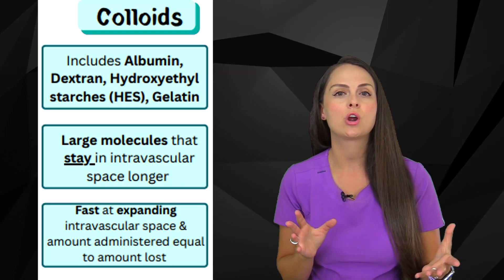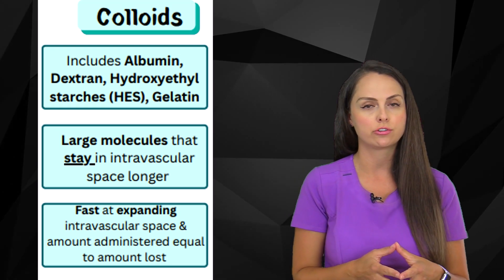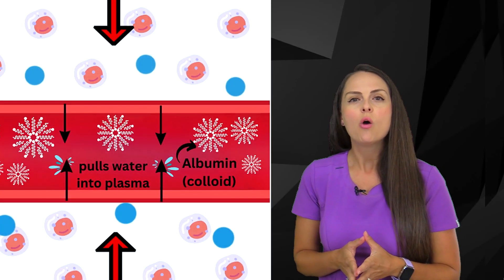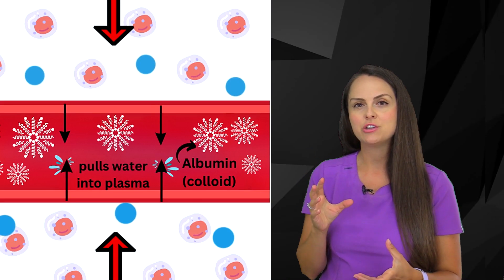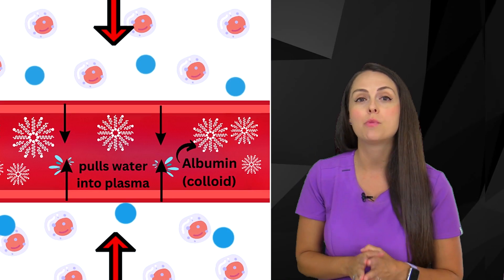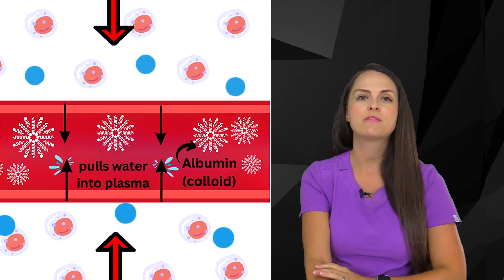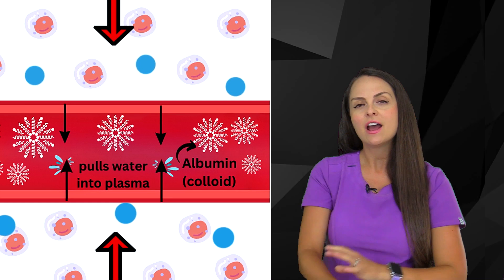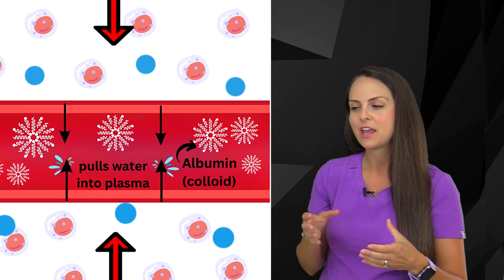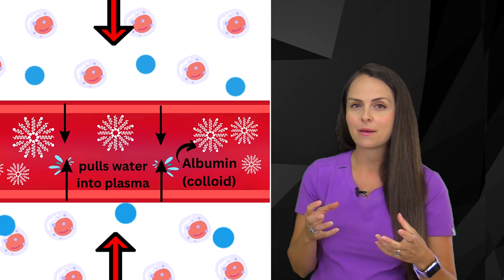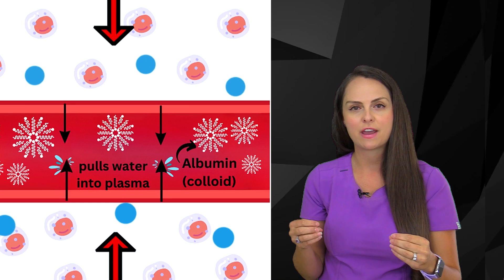And how these fluids work is that they are going to pull water into that intravascular space. Now how do they do this? Well whenever you're administering a bag of colloids, inside that bag you have very large molecules. So whenever those molecules go inside the intravascular system, they are unable to actually escape that capillary wall because they're just so big. So because they can't escape that capillary wall, high concentrations of them hang out inside the intravascular system.